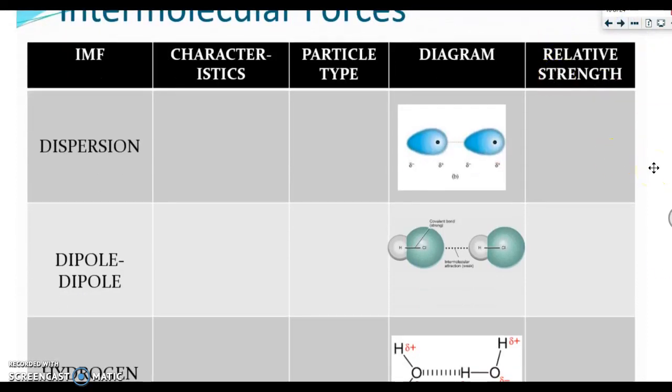Here's a chart that we are going to fill out, and then we'll do some examples. So the first IMF is dispersion, and dispersion exists actually between all molecules. So under particle type here, we're going to write all. Because all molecules have dispersion forces, regardless of whether they're polar or nonpolar. This is the only type of force that exists between nonpolar substances, so things that are nonpolar only have dispersion. In addition, noble gases have been known to also have dispersion forces.